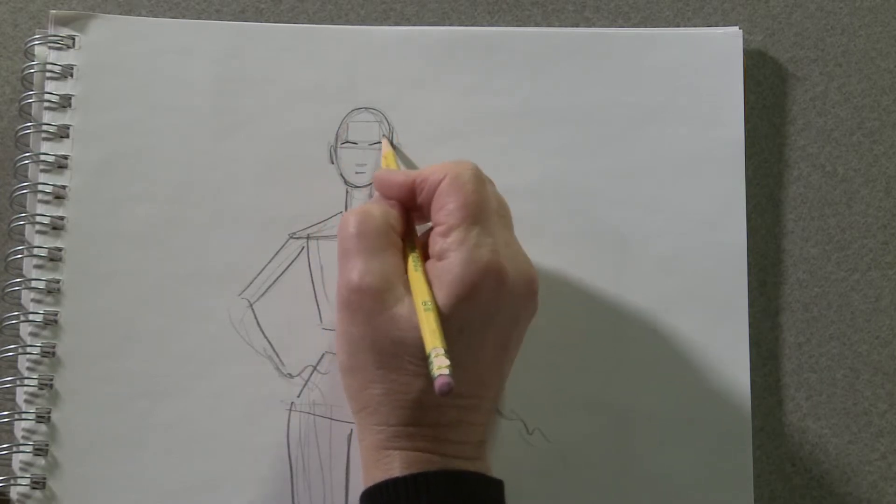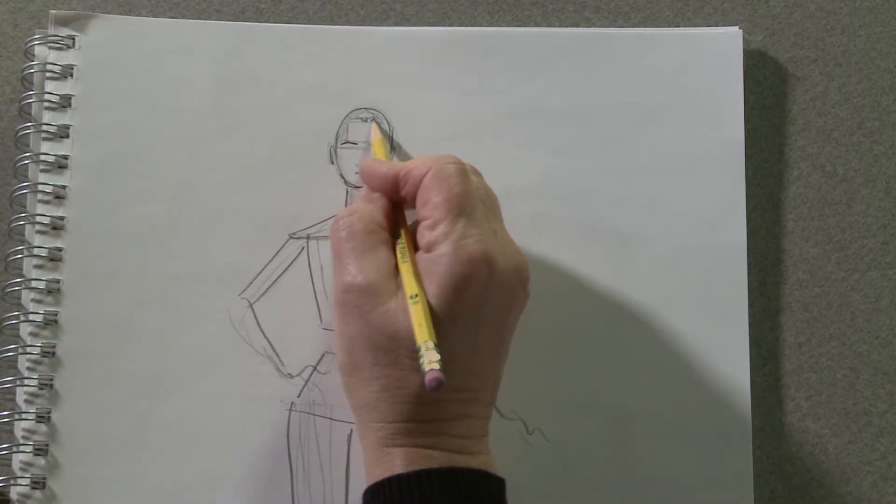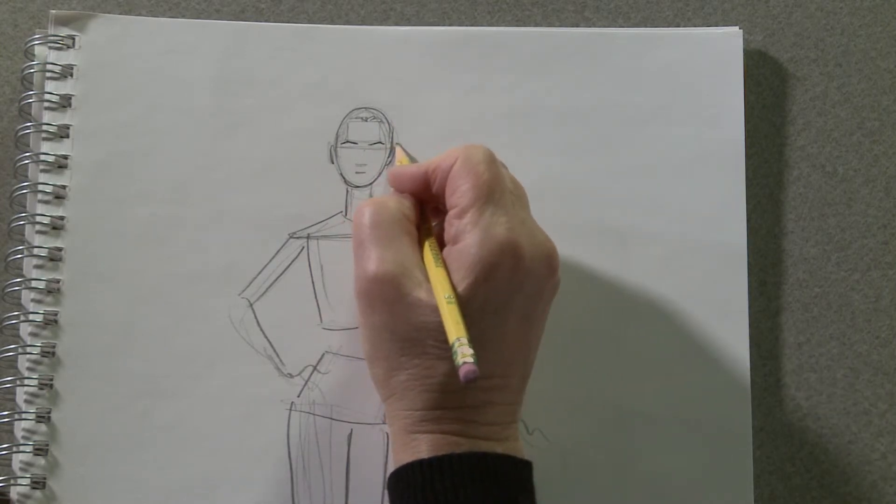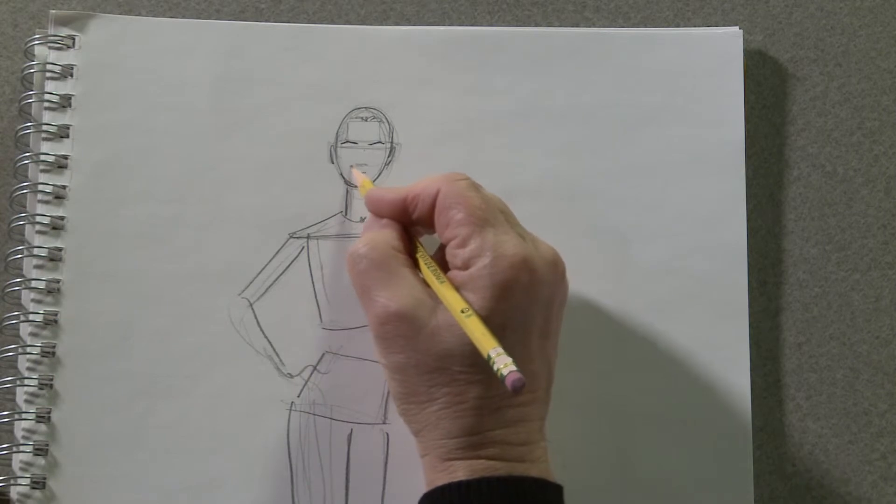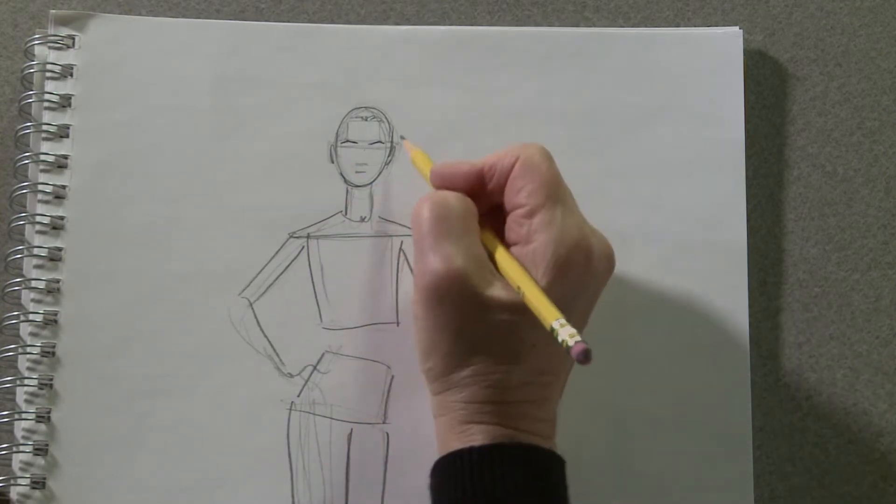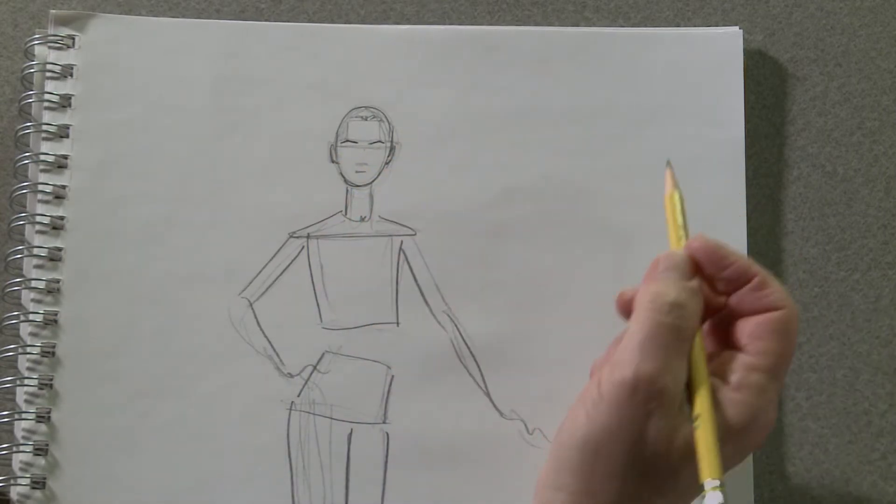Remember where the eyebrows were located on the first one with that forehead rectangle shape, which helps you know where the temples are and where the hairline is located. And then from the eyebrows around to the sides and from the nose over to the sides, that's the length of the ear for an adult. So try not to make them like little baby ears.